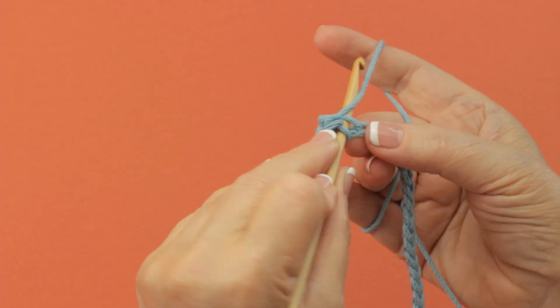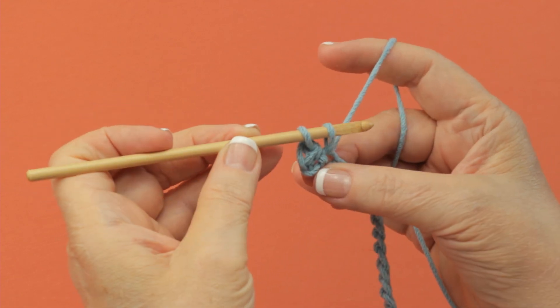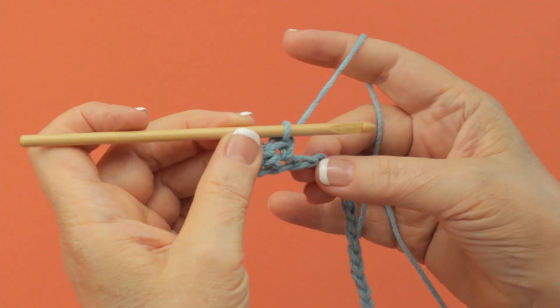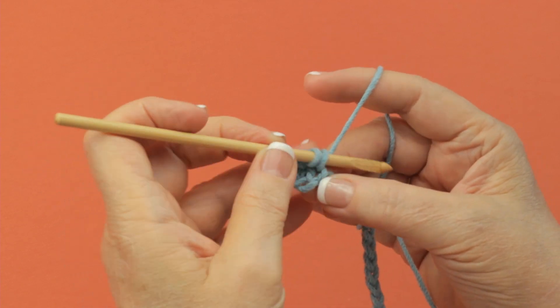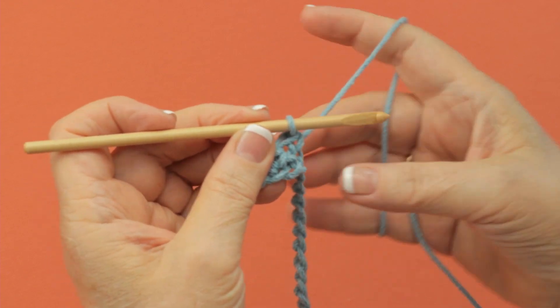Insert the hook in the next chain, yarn over, pull that loop through the chain, yarn over and draw through both loops. You can do this all the way across or however many times you're instructed to do. And it's a real simple stitch.